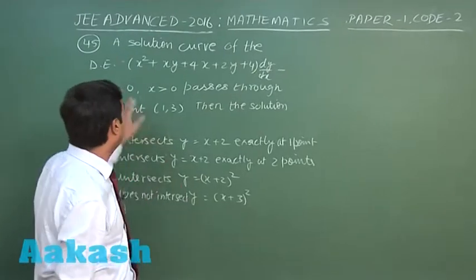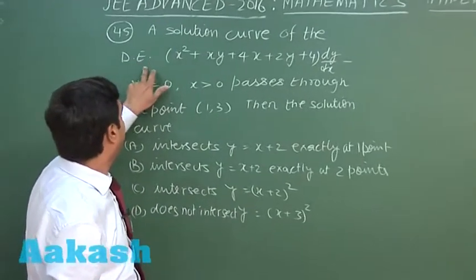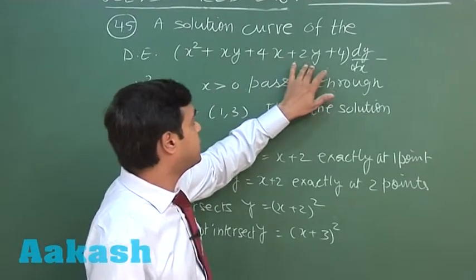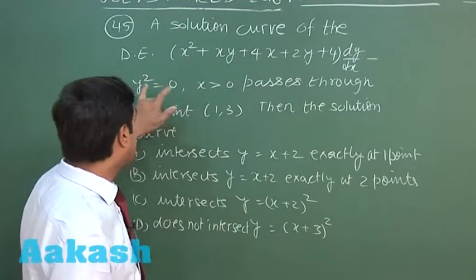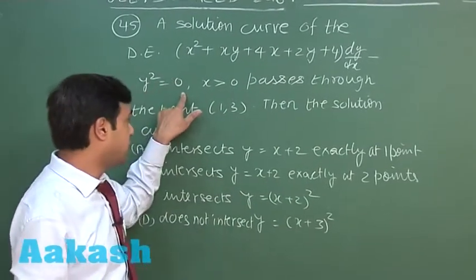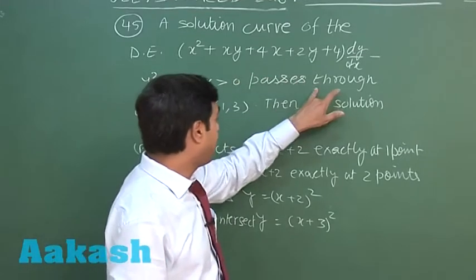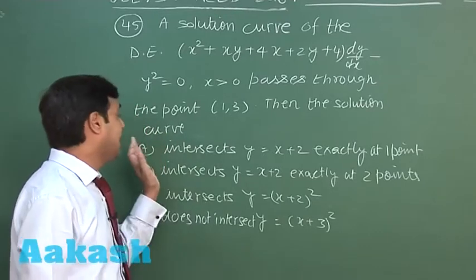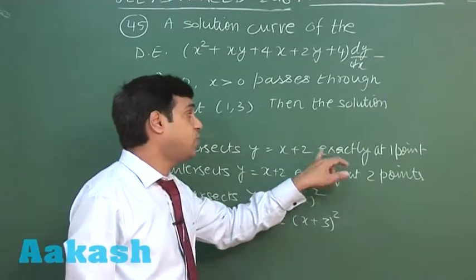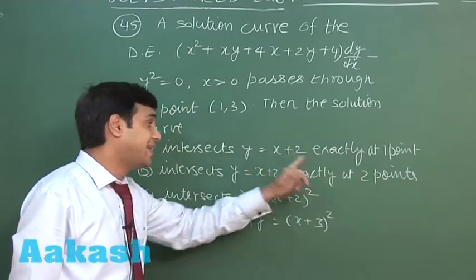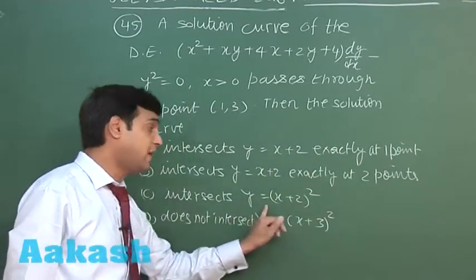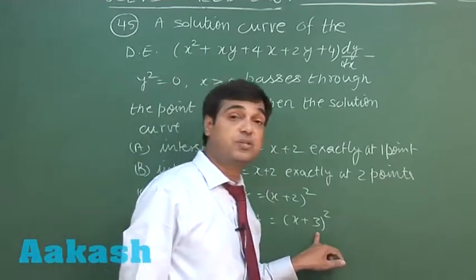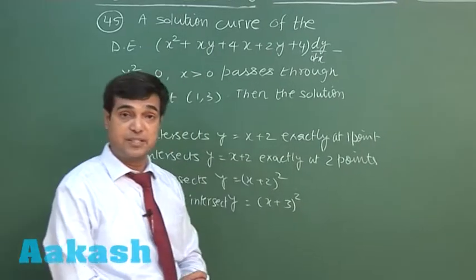Let's take question number 45. A solution curve of the differential equation (x² + xy + 4x + 2y + 4)·(dy/dx) - y² = 0, where x > 0, passes through the point (1, 3). We need to determine which options are correct regarding intersections with y = x+2, y = (x+2)², and y = (x+3)².